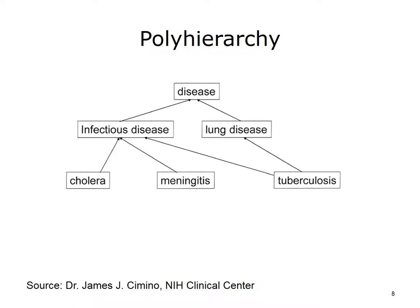In a poly hierarchy, a term can have more than one parent. In this case, tuberculosis is noted both as a lung disease and an infectious disease. Both pathways lead to the top level of disease. In this structure, if we queried for infectious disease, we would get tuberculosis. If we queried for lung disease, we would also get tuberculosis.